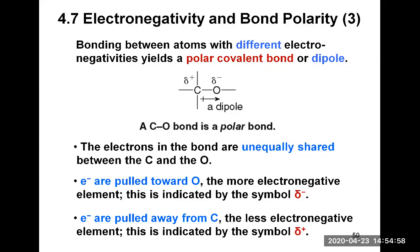The electrons in this bond are not equally shared — they are unequally shared between carbon and oxygen, which creates a dipole or polarity. This is represented with an arrow pointing towards the more electronegative element, oxygen, while the plus end of the arrow points towards the less electronegative element, carbon. To represent a polar bond you can use either delta plus/delta minus notation or a dipole arrow.